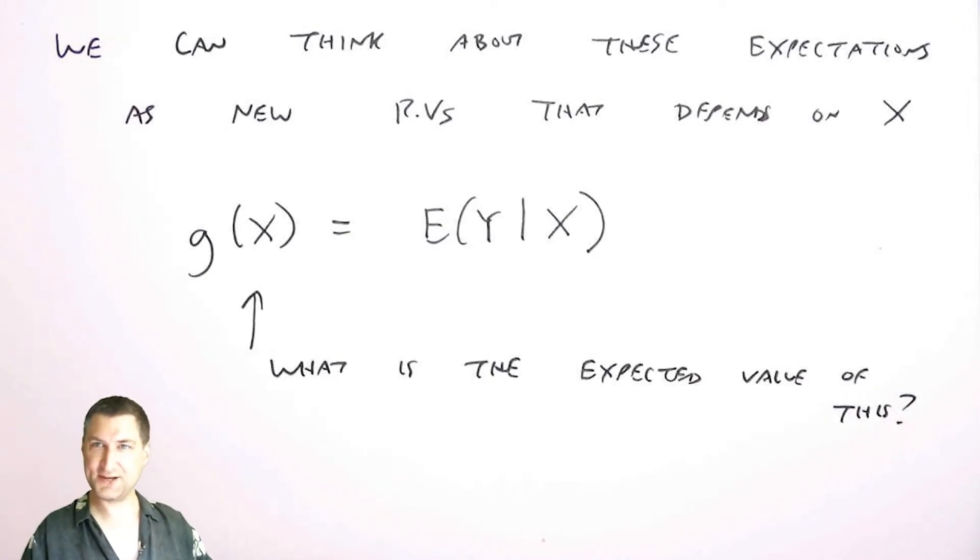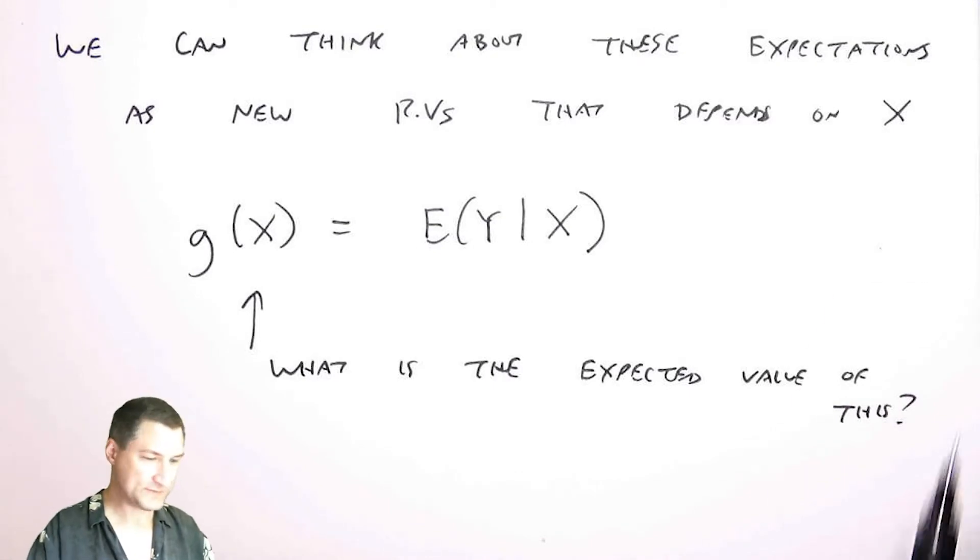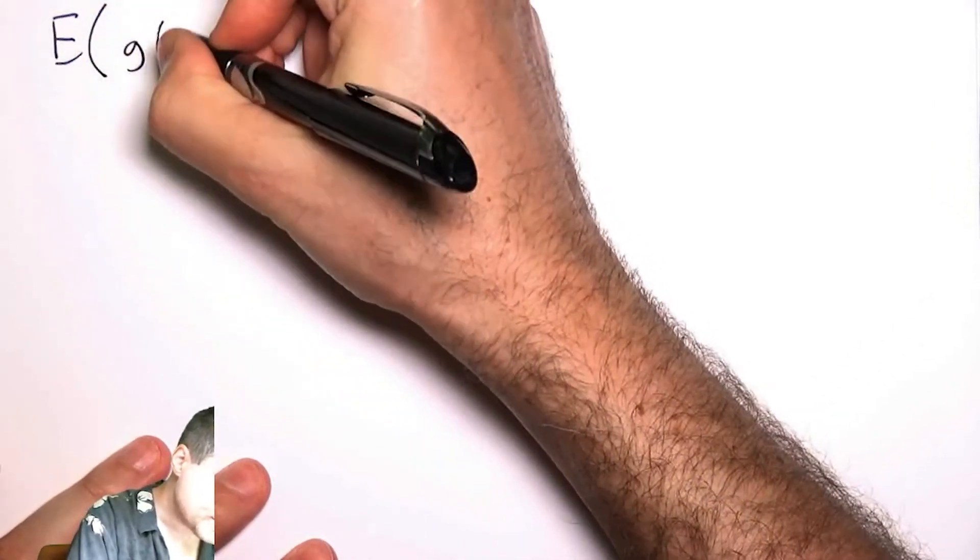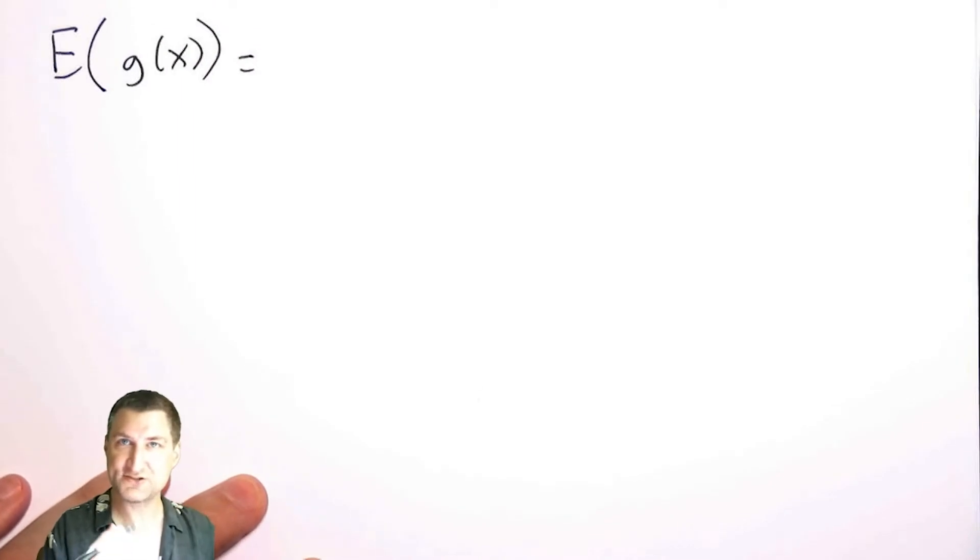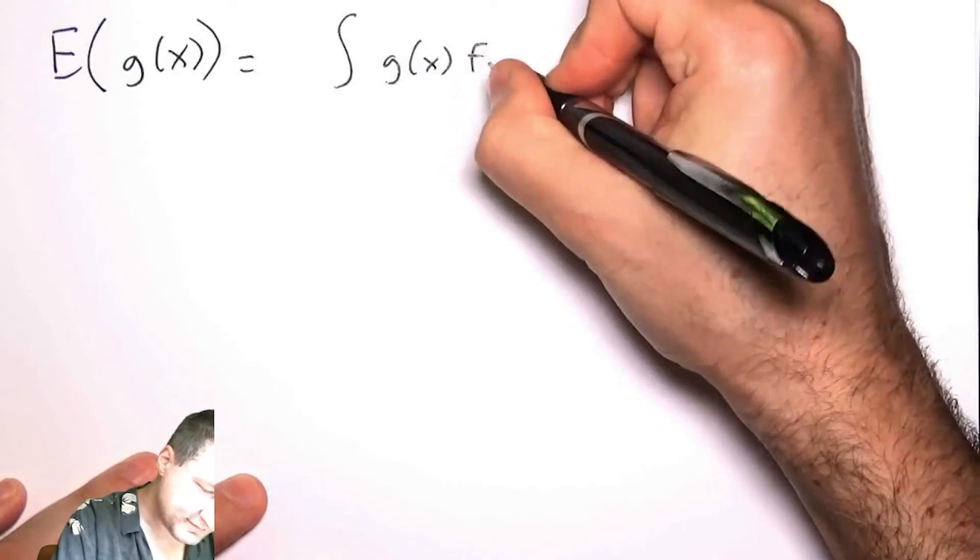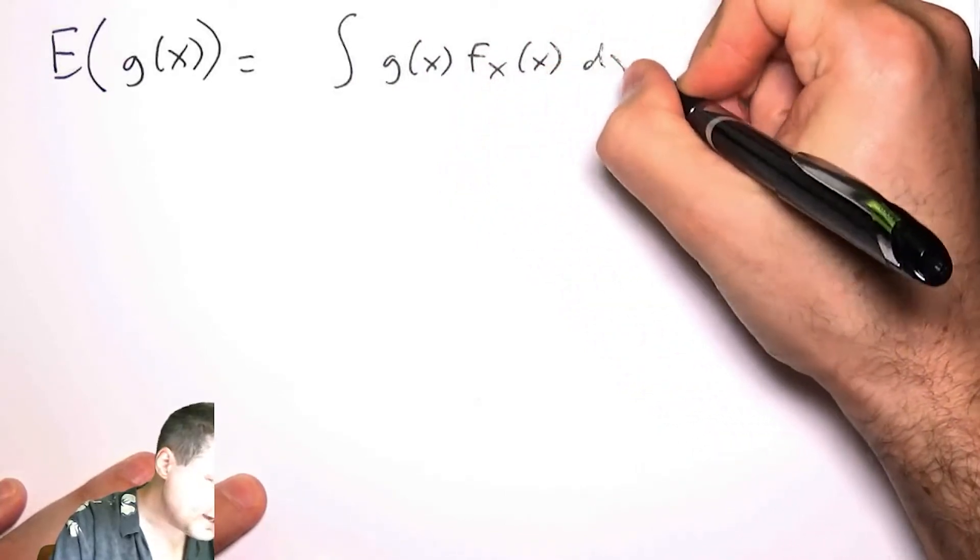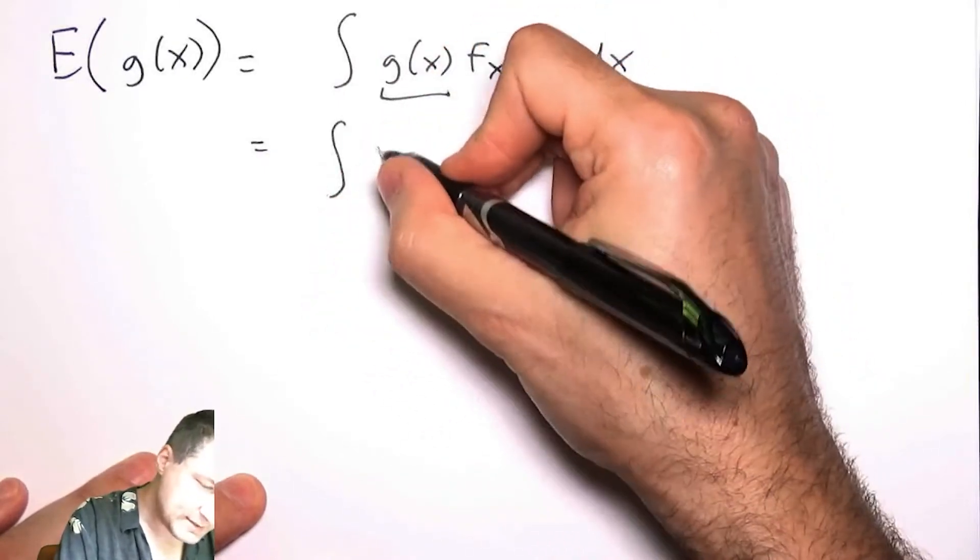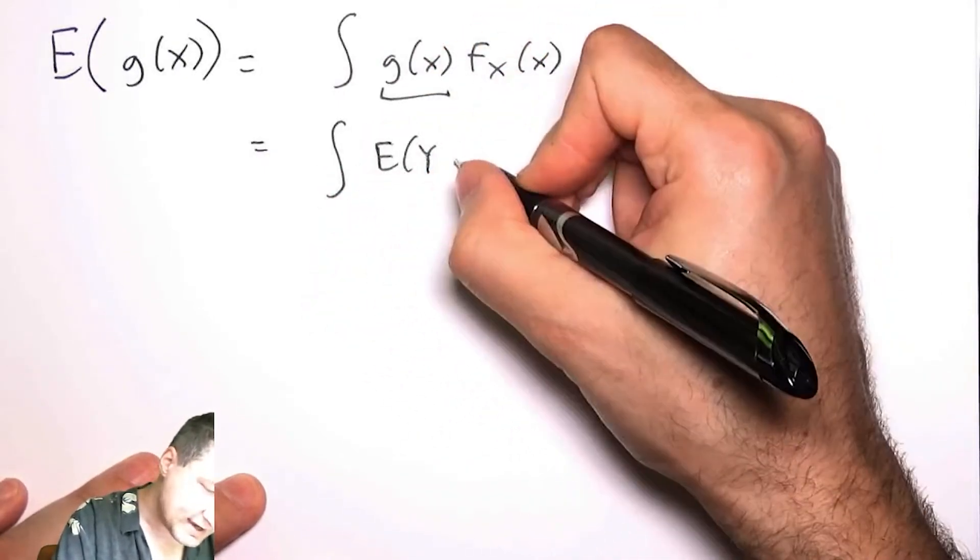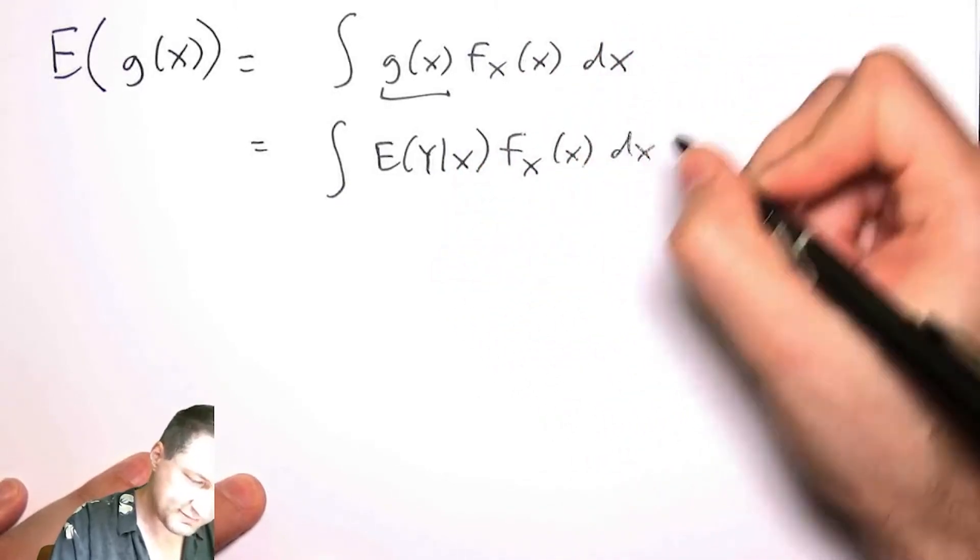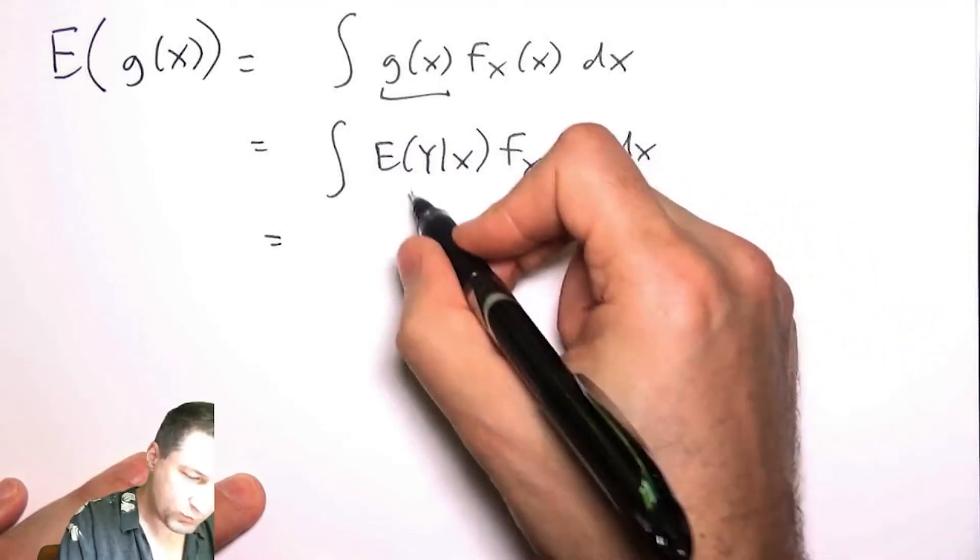So this is kind of like a nested or an iterated expected value. So let's think about this. The expected value of this function of x. Well, this is a function of x, so I should compute it with respect to the pdf of x. That's a dx. And now I say, what is this definition? This is actually the expected value of y given x, times this pdf.